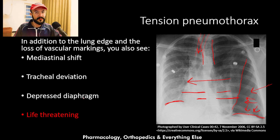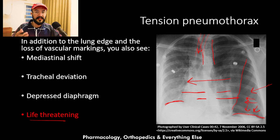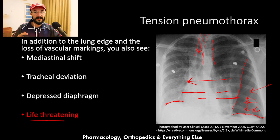Tension pneumothorax is life threatening and may kill the patient. All types of pneumothorax can convert to tension pneumothorax, which is why pneumothorax requires emergency treatment.